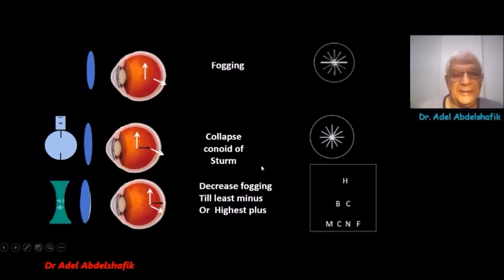Then, we collapse the conoid of Sturm. Then, we decrease fogging by using the least minus or the highest plus to get the best visual acuity.